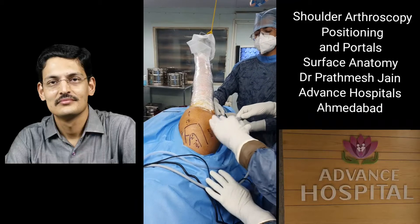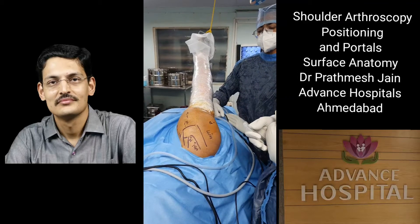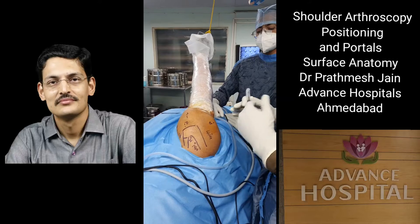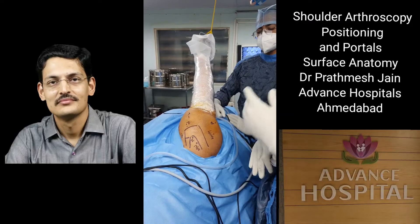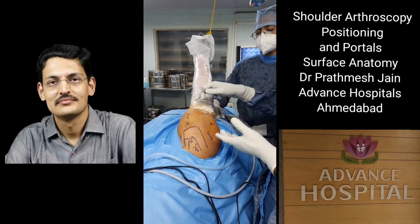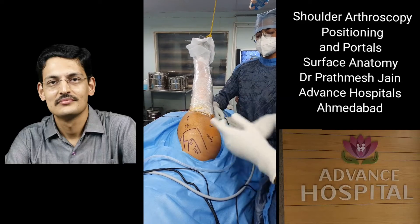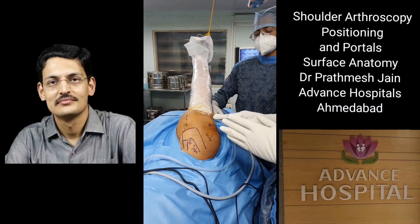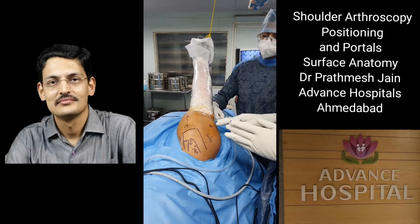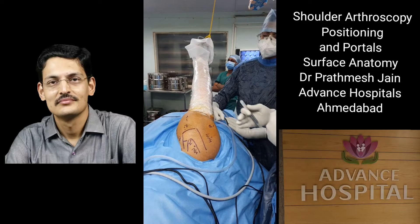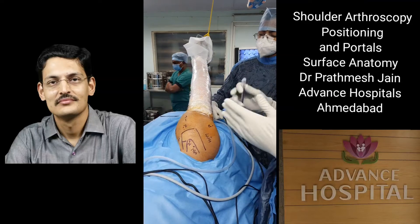We try to keep the glenoid parallel to the floor. Occasionally it may tilt anteriorly, so you can tilt the table a little bit or place the patient in a semi-posteriorly tilted position. What we want is the glenoid facing perpendicular to the floor, which gives better orientation for the surgical view.